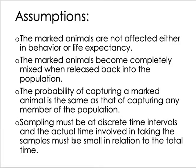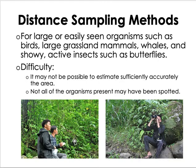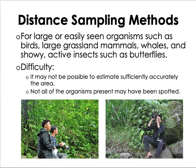The mark-recapture method assumes that marked animals are not affected in behavior or life expectancy. For distance sampling, researchers observe birds along the transect using binoculars or identify them based on calls, recording for species richness. For plants, distance sampling is used for large trees that cannot be sampled directly — they are identified based on leaf structure from a distance, while smaller trees are sampled directly.